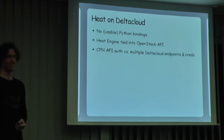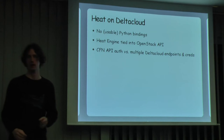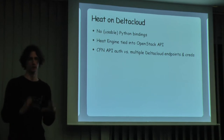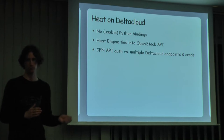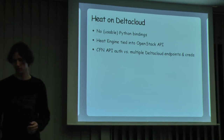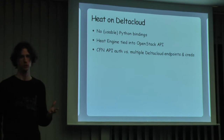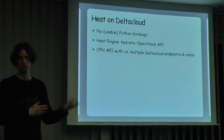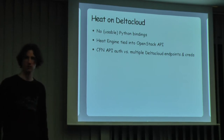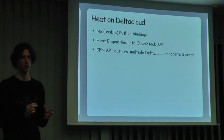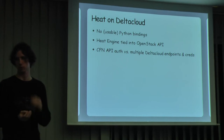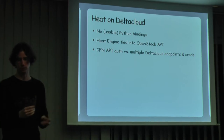The first thing was to get HEAT talking with DeltaCloud for multi-provider support. We looked at other things, but DeltaCloud came up as the best idea. The problem is that HEAT is written in Python along with the rest of the OpenStack projects, and we had no Python bindings for DeltaCloud, so we wrote some. The other issue was that the HEAT engine was tied to the OpenStack API, so we needed to figure out how to swap that out and use DeltaCloud. Also, the CloudFormation API wasn't built with multiple back-ends and credentials in mind, so we needed to figure out the whole authentication.